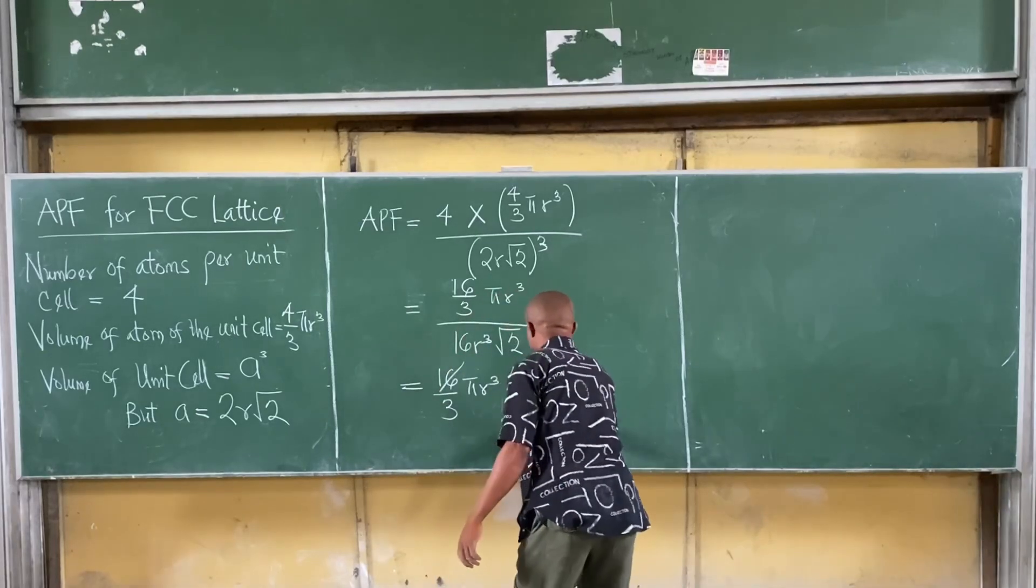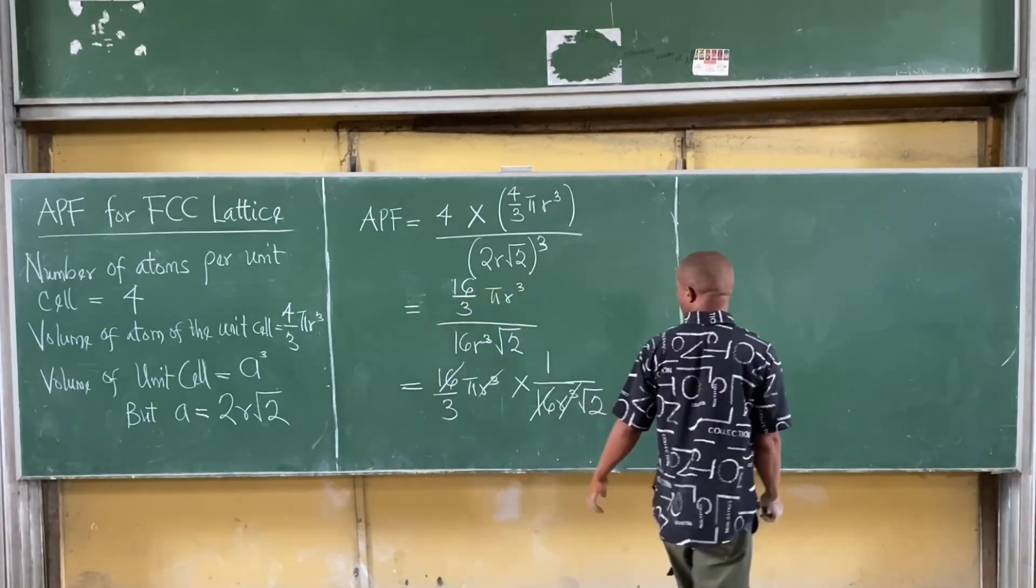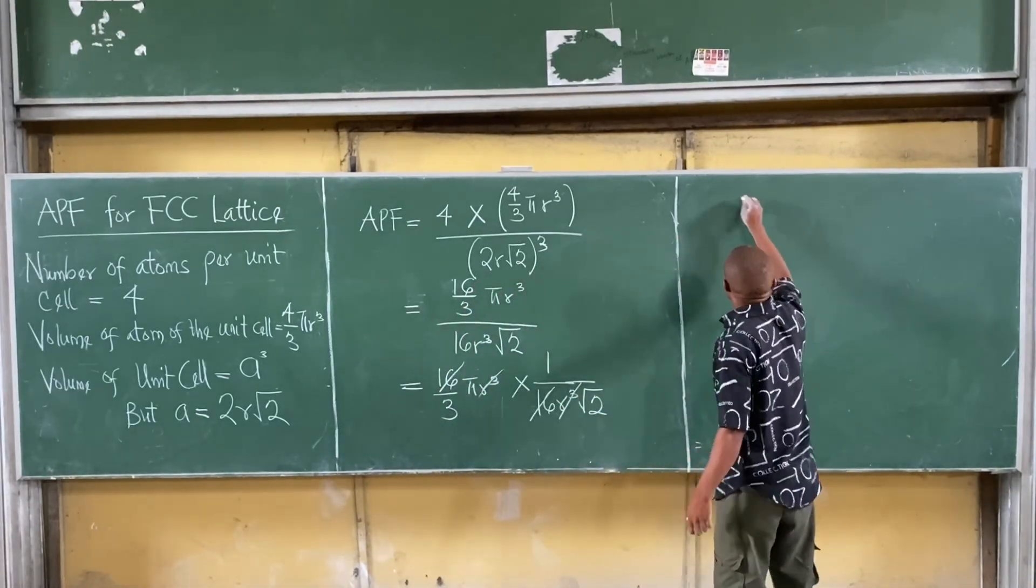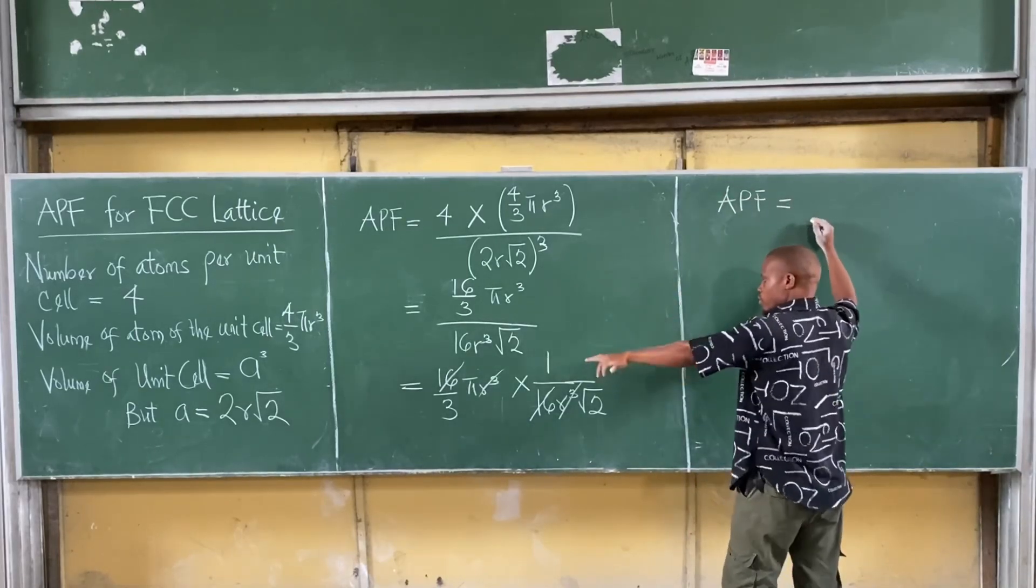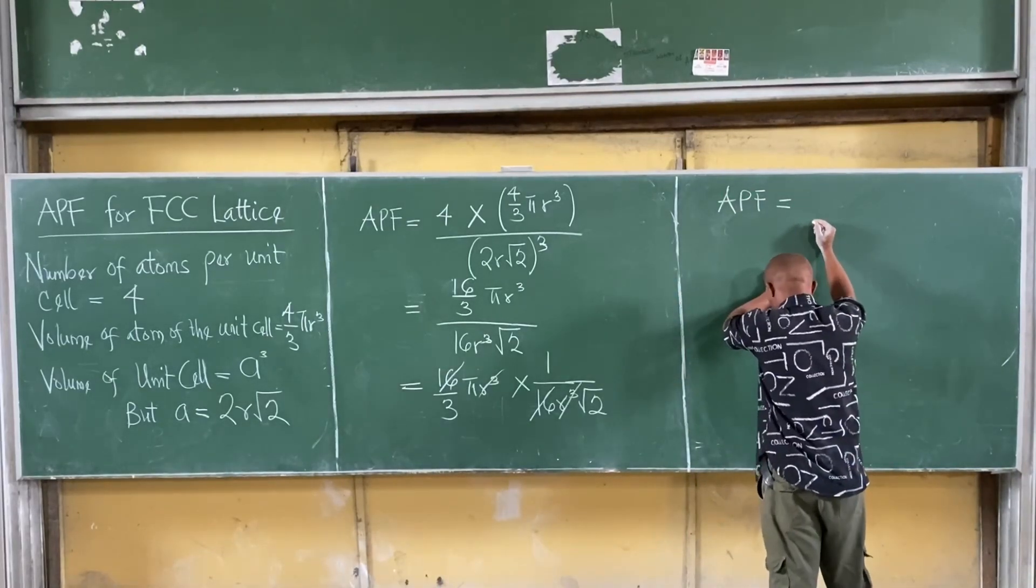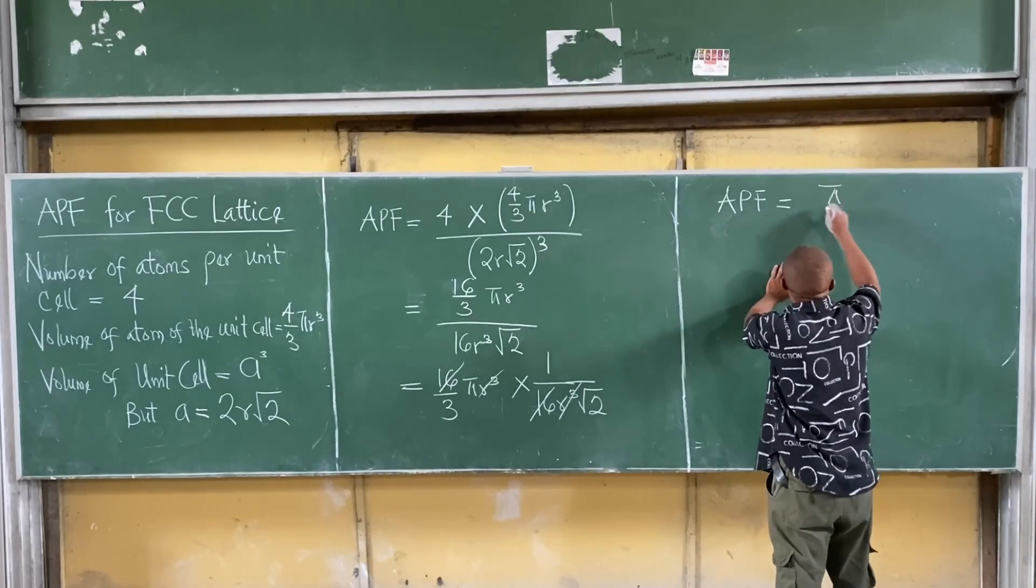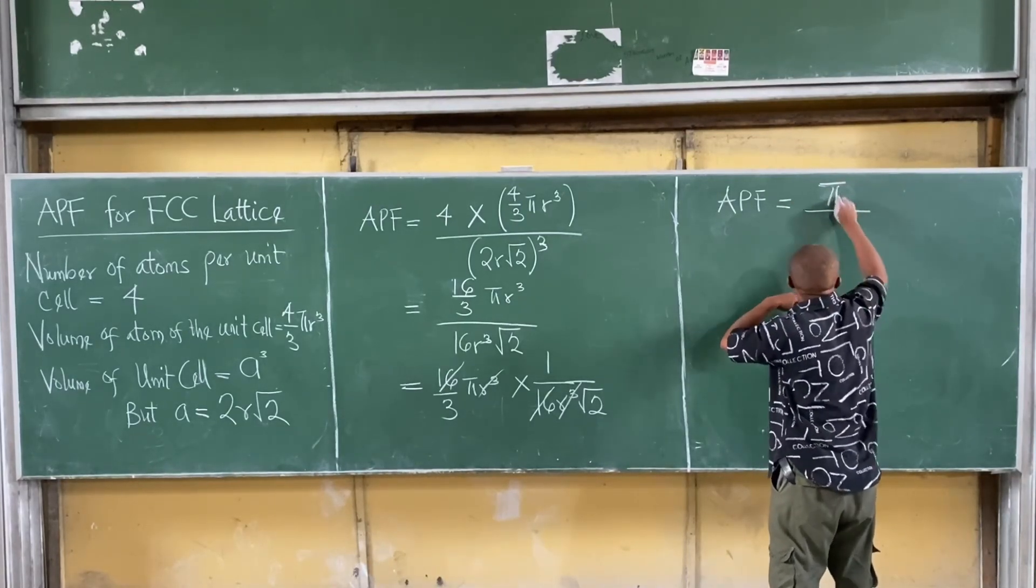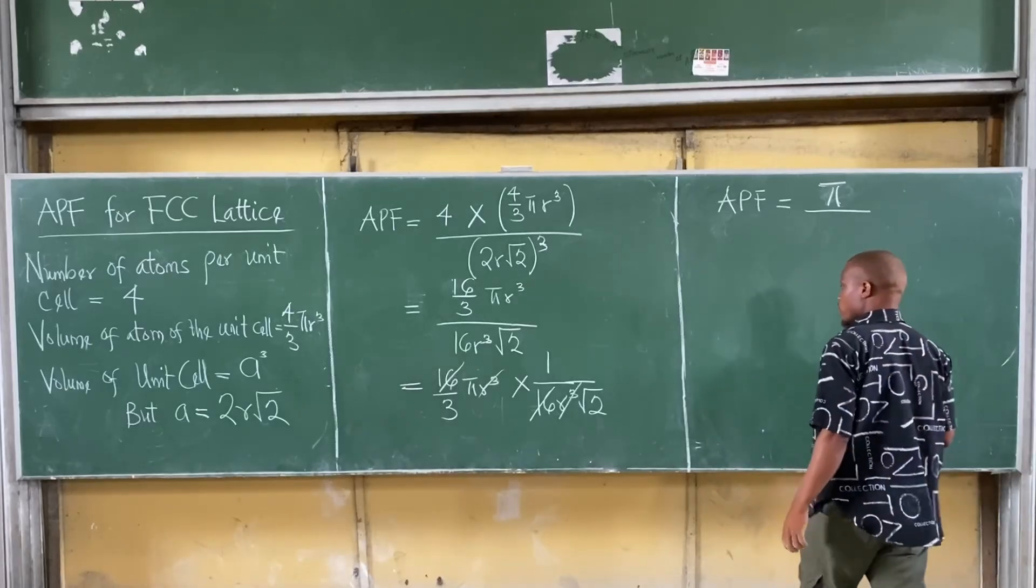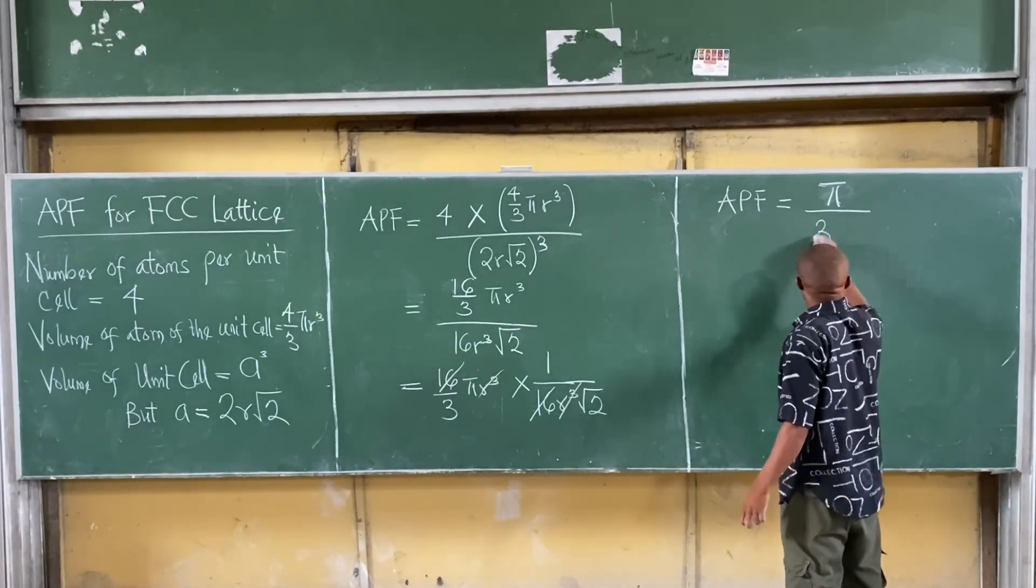So, this gives me 16π/3 radius³, multiplied by 1 over 16R³√2. So, in canceling, we have that's my APF equal to π over 3√2.